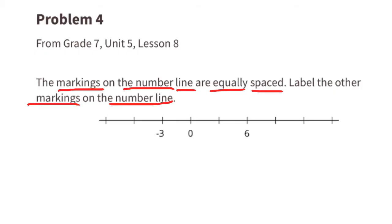The absolute value between negative 3 and 0 is 3 units, so the markings from left to right would be negative 9, negative 6, negative 3, 0, 3, 6, 9, 12, and 15.